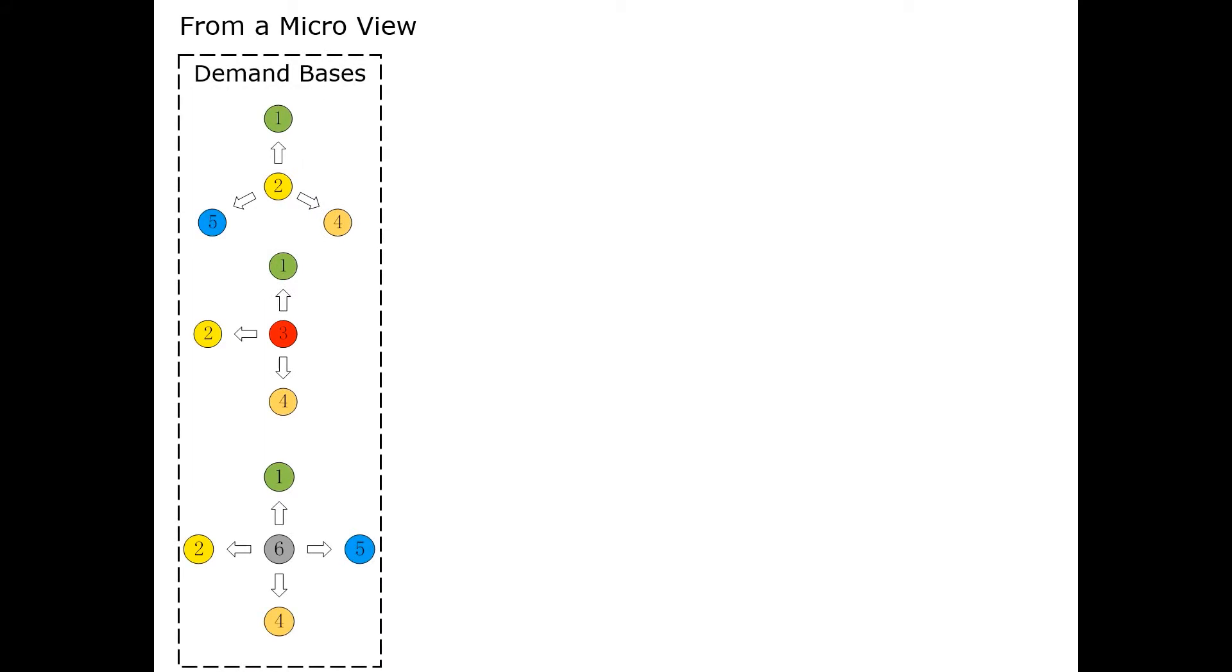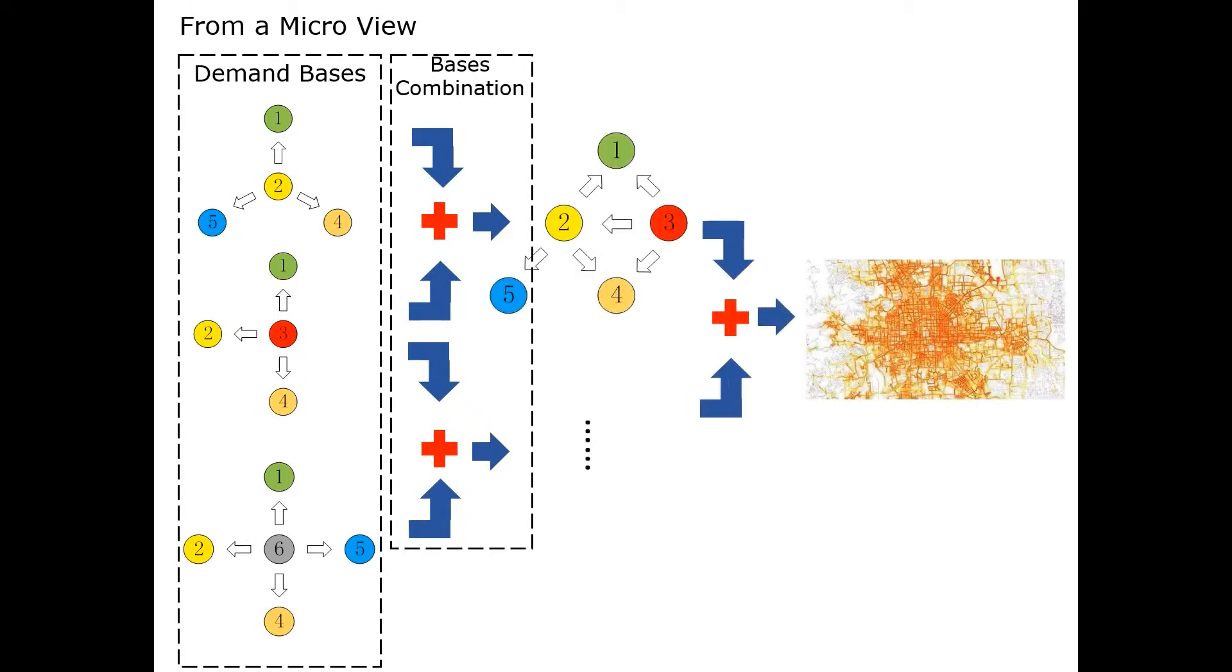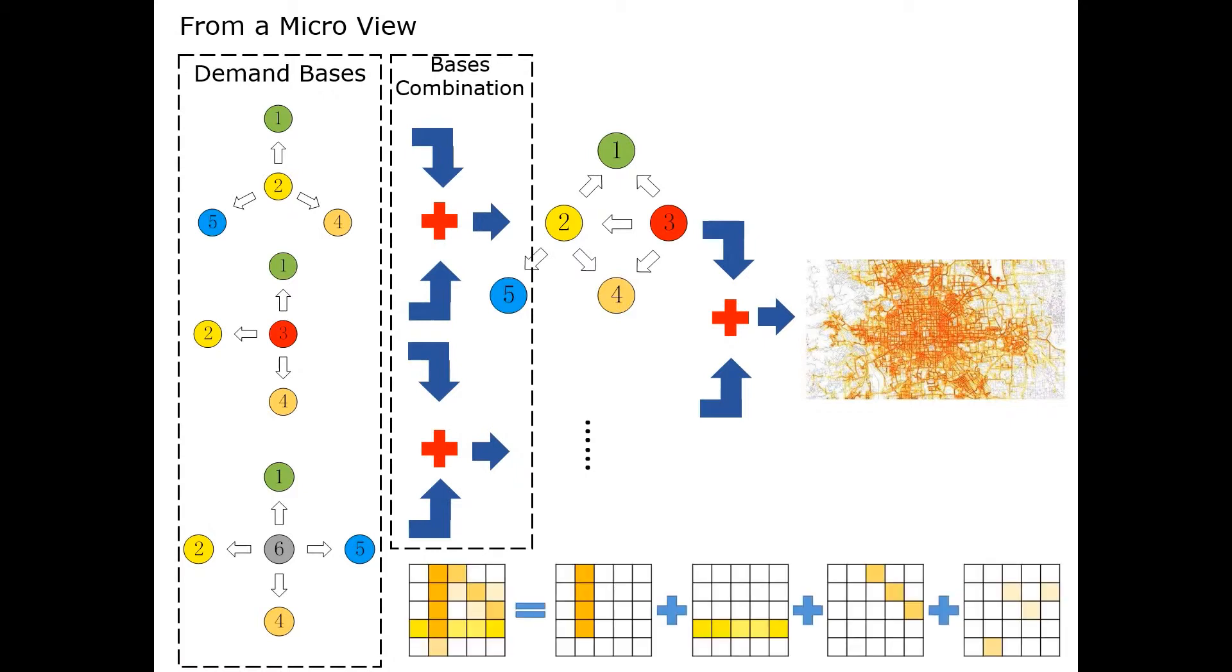For a macro view, we think there are some special demand bases. They are invariant in time intervals and they can combine with others to form high-level bases. So, the demand of all regions in a given time interval can be viewed as a special basis combination. The decomposing improves the prediction accuracy a lot.